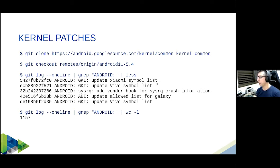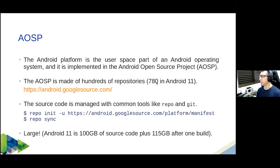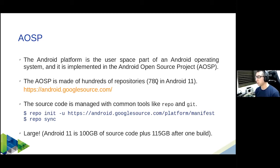We have to apply those patches to have all the features needed for a given Android release. The Android platform — the user space part — is provided by the Android Open Source Project, which is made of hundreds of repositories. Android 11 uses more than 708 repositories.